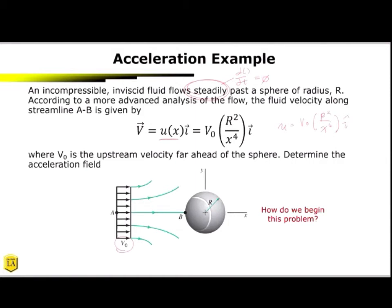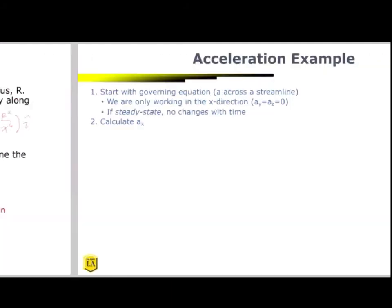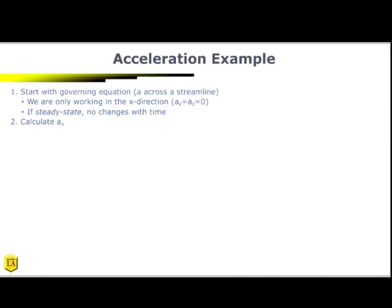We begin this problem very similarly with our velocity field problems, where we start off writing our u component, u and v and w components. And then what we're going to do is we're going to start working on our material derivative. So start with governing equations, a across the streamline. If we're only working in the x direction, then ay, az is equal to zero. In a steady state, no changes with time.